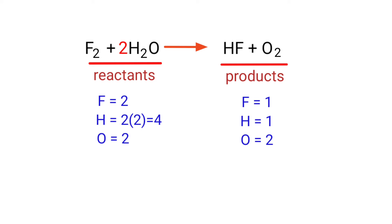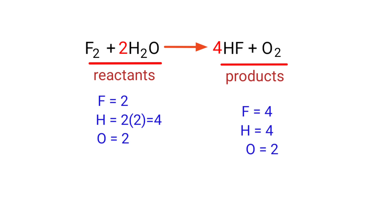Now we need to balance the hydrogen atoms. To do this we need to put a coefficient of four in front of HF. The hydrogen atoms are now balanced.